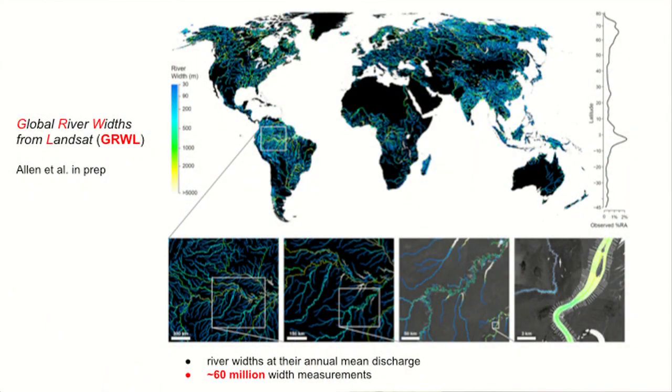Also from our group, we have developed the Global River Width from Landsat — the GRWL dataset. It contains the centerline locations of rivers and their mean annual width, with measurements tied to mean annual discharge. Think of this as a snapshot of global rivers in their mean state.